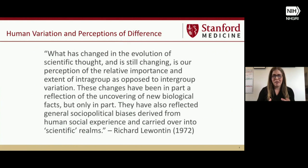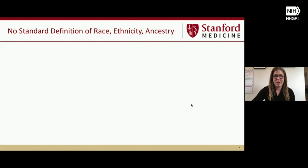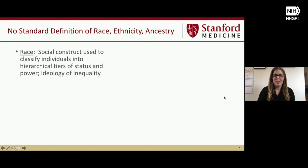This has been studied for a really long time. I love this quote by Dick Lewontin in 1972, who talks about human variation and perceptions of difference. What we see a lot in looking at differences within and between human populations is this immense impact of society and socio-cultural factors influencing our interpretation of the science. So there's no standard definition of race, ethnicity, and ancestry, and this is one area in which social and cultural values, ideas, and identities really influence the science.